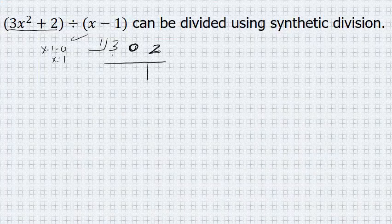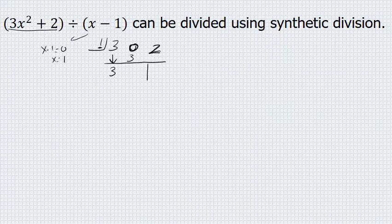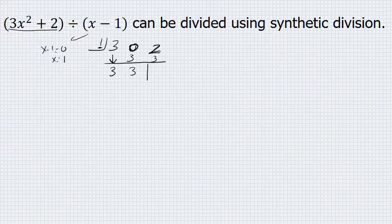When performing the synthetic division, you bring the first number down unchanged, and then take 1, what's in the box, times 3 to get 3. As you go down the columns, you add: 0 and positive 3 make 3. 1 times 3 is 3, and 2 and 3 is 5.